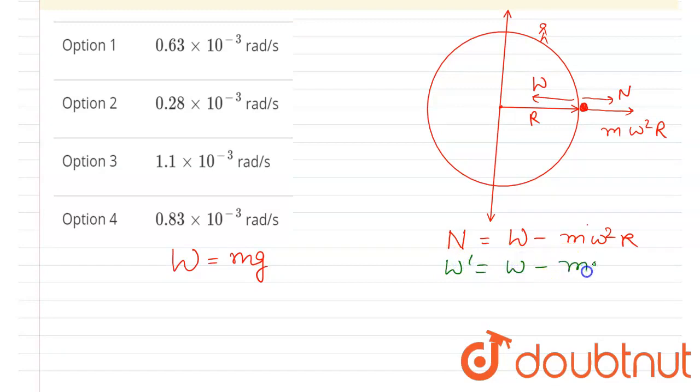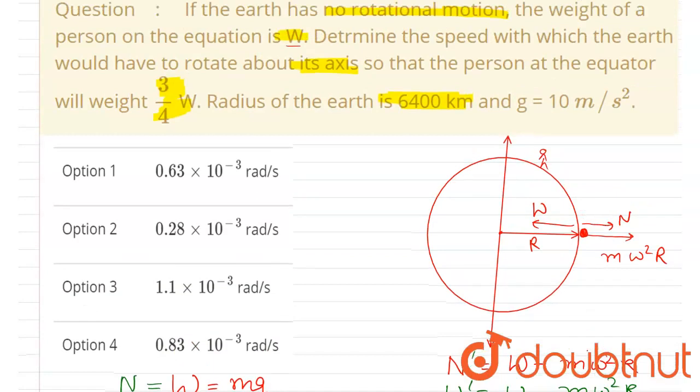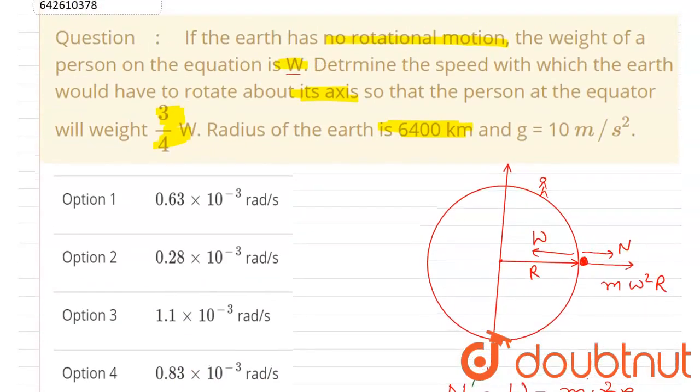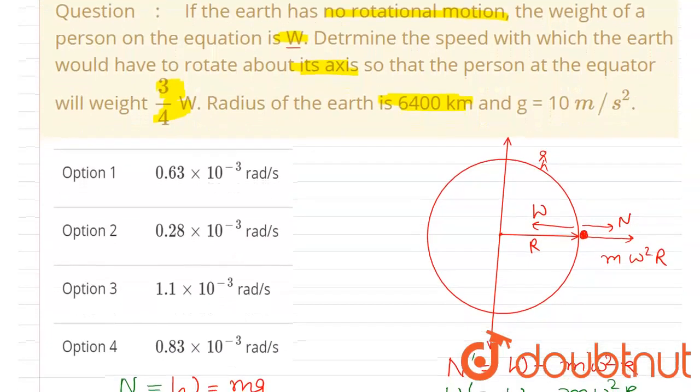And here the normal reaction which was measured earlier was this. So we have two weights, and in this question it is given that when the earth starts rotating, the weight is measured as 3/4 W.